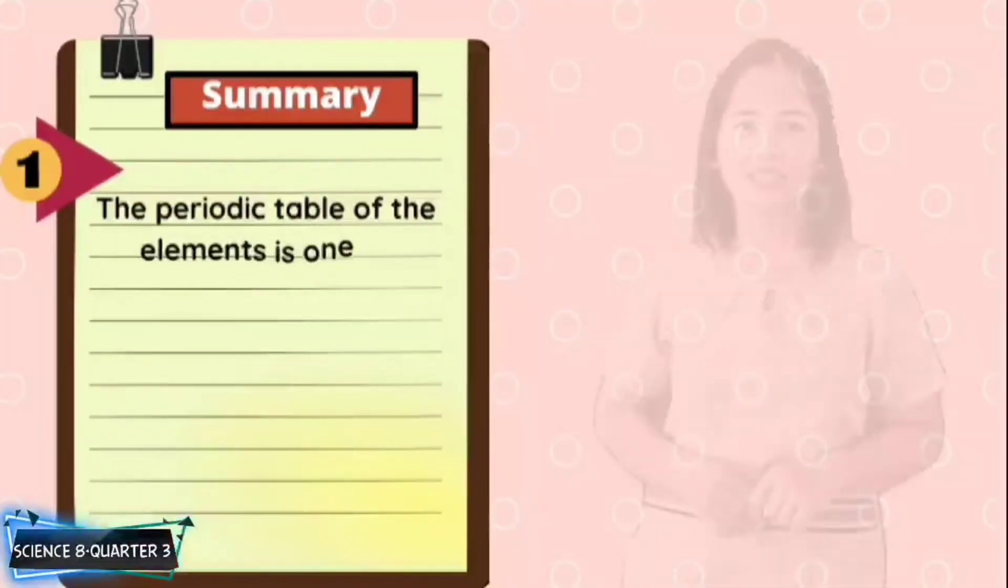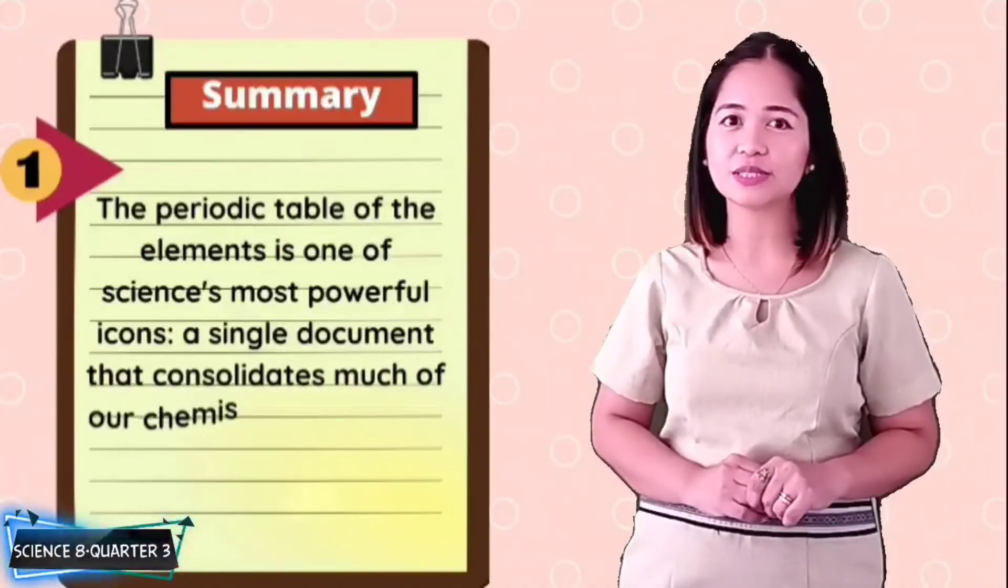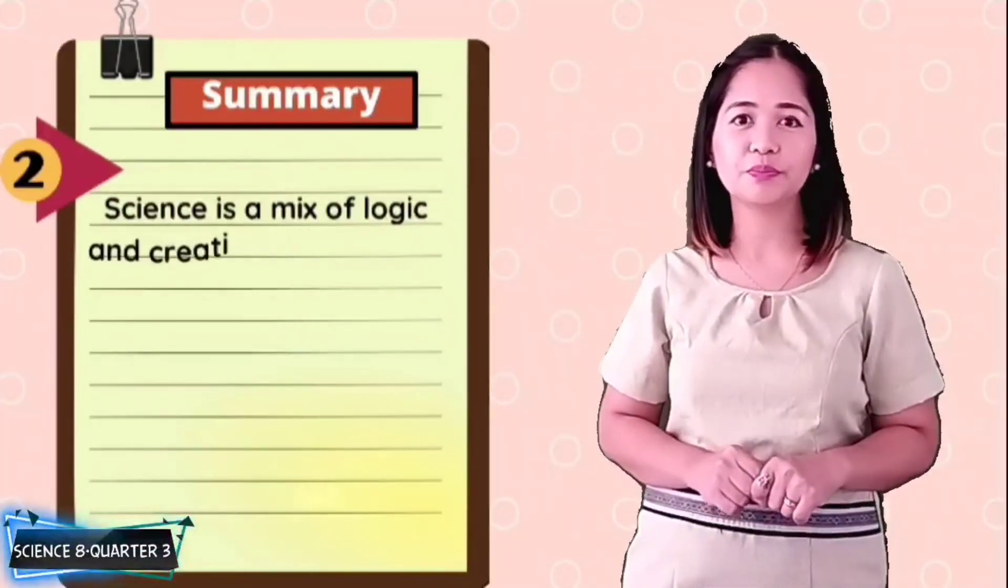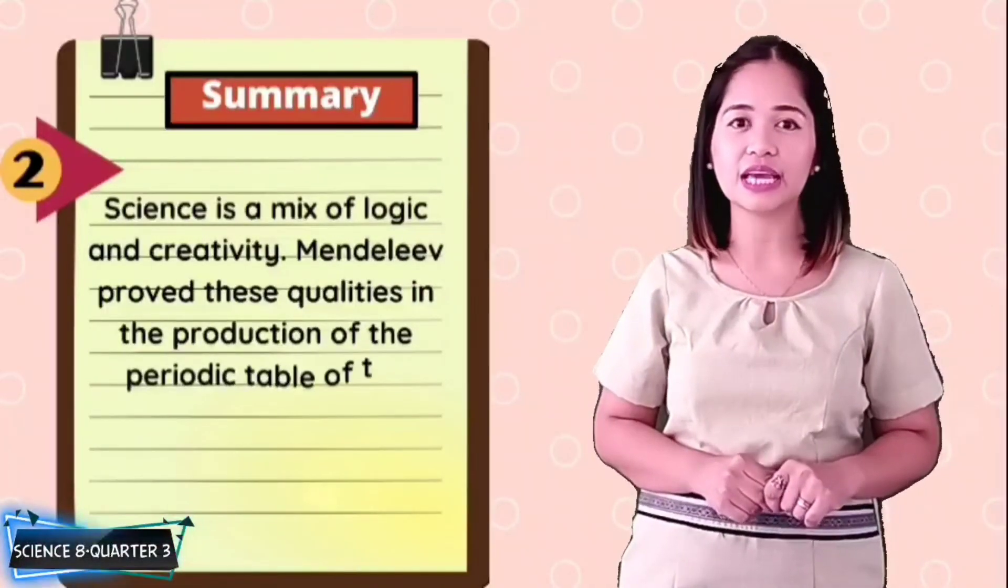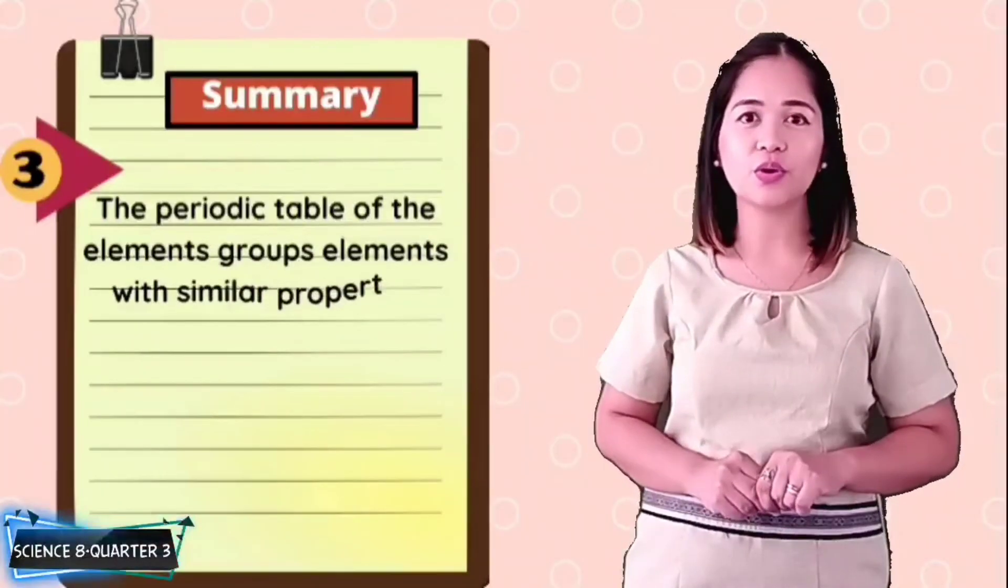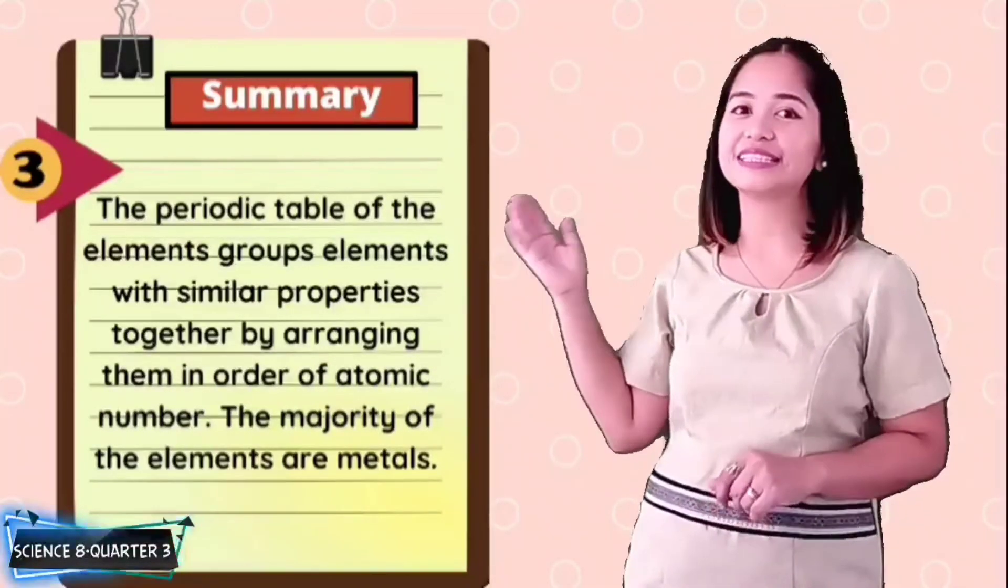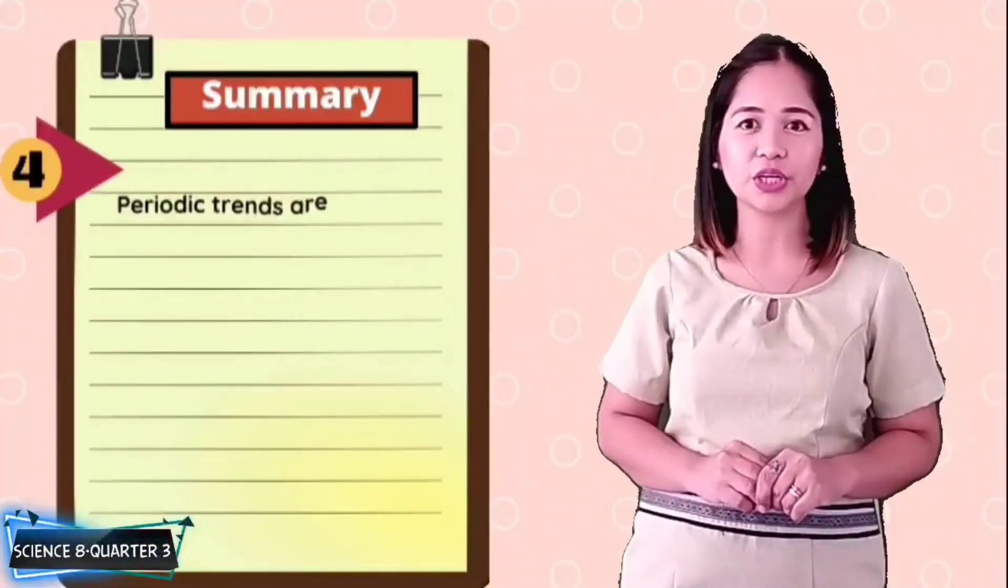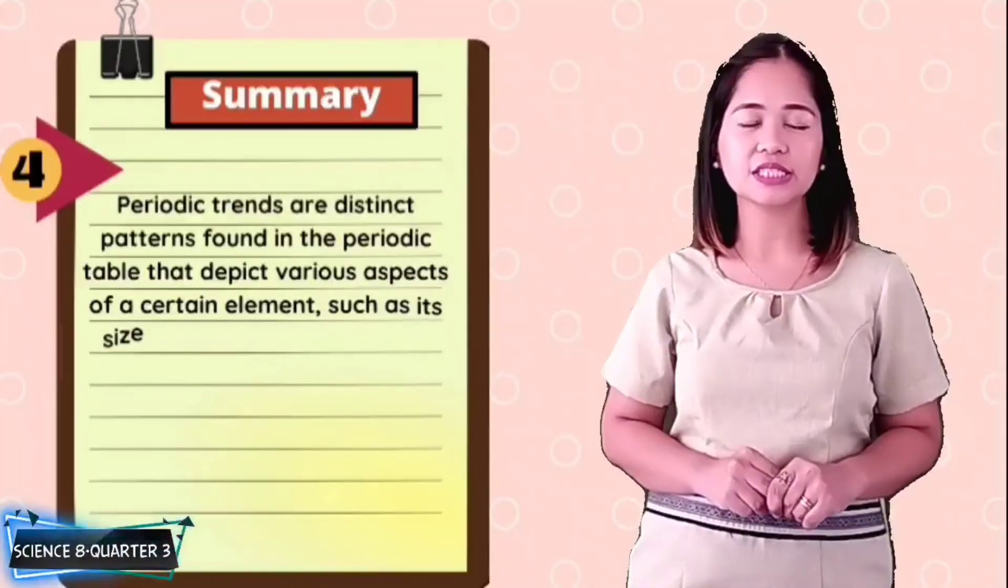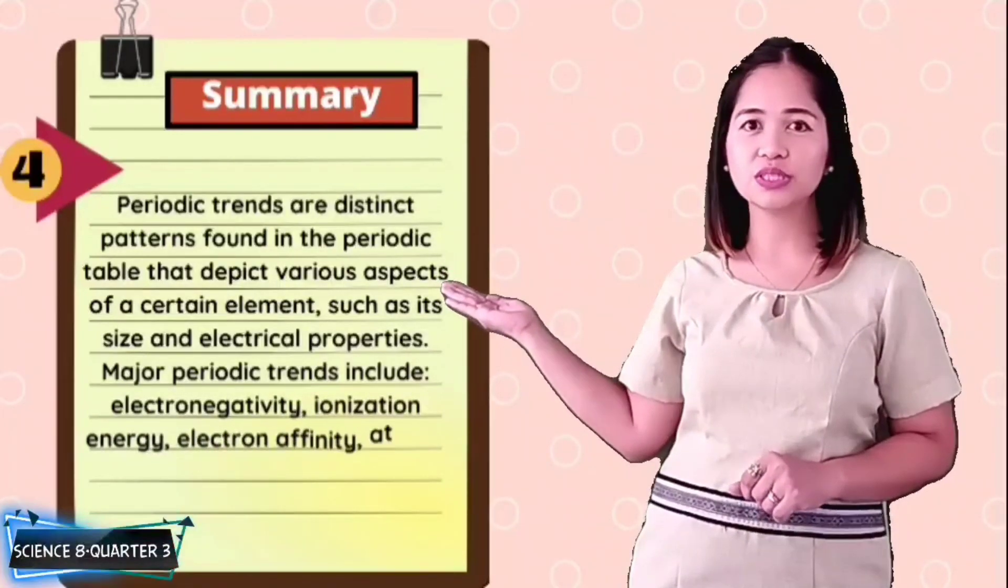Let us summarize our lesson. The periodic table of the elements is one of science's most powerful icons, a single document that consolidates much of our chemistry knowledge. Science is a mix of logic and creativity. Men lived through these qualities in the production of the periodic table of the elements. The periodic table groups elements with their similar properties together by arranging them in order of atomic numbers. The majority of the elements are metals. Periodic trends are distinct patterns found in the periodic table that depict various aspects of a certain element, such as its size and electrical properties. Major periodic trends include electronegativity, ionization energy, electron affinity, atomic radius, and metallic character.